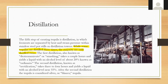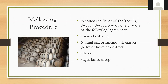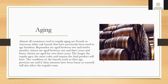Blanco is the first real category of tequila — you can bottle it there and finish, or choose to mellow it in oak, as we do with bourbons and whiskeys around the world, to soften the flavor. To soften tequila's flavor, you may occasionally see the addition of caramel coloring, natural oak extract, glycerin, and sugar-based syrups. Almost all containers used for tequila aging are French or American white oak barrels that have previously been used to age bourbon or whiskey.